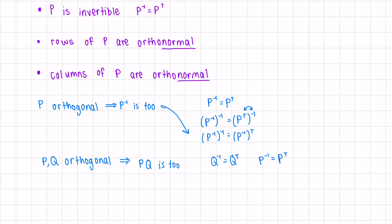Now let's multiply these together. Q inverse P inverse would equal Q transposed P transposed. Then we can factor out the negative one and the T. When we do this, the matrix multiplication switches order, and we can see that PQ is in fact orthogonal.